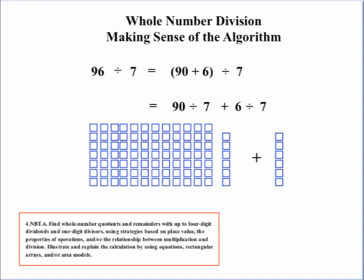So, written down here in equation form, this is what we did just a minute ago. We took the 96, we broke it up to 90 plus 6. Then, using our distributive property, we're actually taking the 90 and dividing by 7, and the 6 and divided by 7. So, we actually have two division operations.